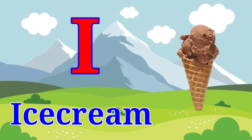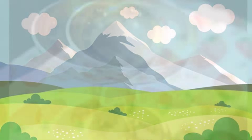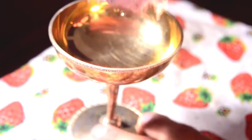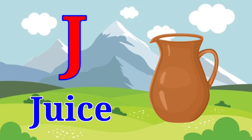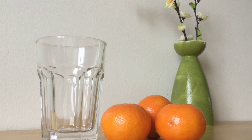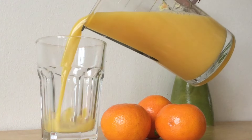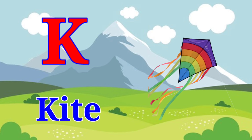I for ice cream. Ice cream — khanewala ice cream. J for juice. Juice hamesha pee dena chahiye.